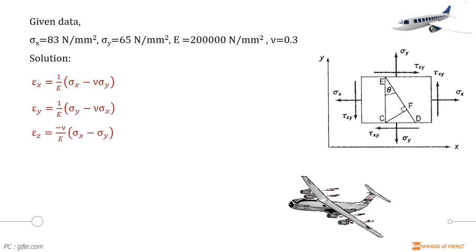So, for x direction, epsilon x is equal to 1 divided by E into sigma x minus nu into sigma y. And for y direction, epsilon y is equal to 1 divided by E into sigma y minus nu into sigma x. And for z direction, epsilon z is equal to minus nu divided by E into sigma x plus sigma y.